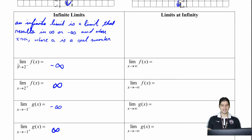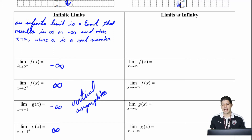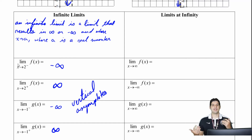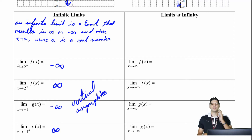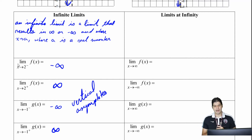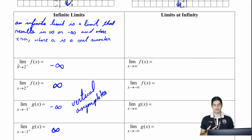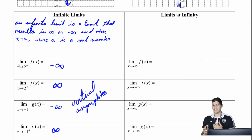So what we want to think about with all of these is that these are all vertical asymptotes. You can see that happening in the graph — there's a vertical asymptote happening, it's either going straight up or straight down. And so we're getting infinite limits; the result of our limit is coming out to either positive or negative infinity.